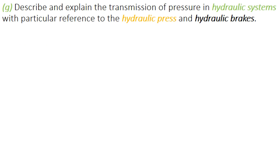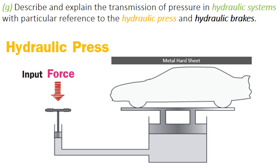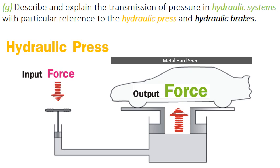Now let's look at the hydraulic press, which is an application of hydraulic systems. The easiest way to understand it is using the same idea as the hydraulic jack. We add a very hard metal plate fixed on the upper side. When we apply input force at the input piston, it produces an output force at the output piston, which lifts the car and presses it between the metal plate and output piston. This is the basic idea we use in hydraulic presses to press, squash, or compress materials.